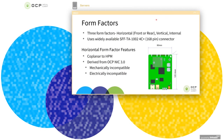There are three supported form factors: the horizontal form factor, which can either be front or rear; vertical form factor; and internal form factor. All the form factors use the industry standard 168-pin 4C plus connector. On the right, we see a picture of a horizontal form factor SCM. It is a 120 mm by 90 mm module, co-planar to the HPM. It is derived from the OCP-NIC 3.0, but is wider and longer than an OCP-NIC, making it mechanically incompatible with an OCP-NIC form factor.